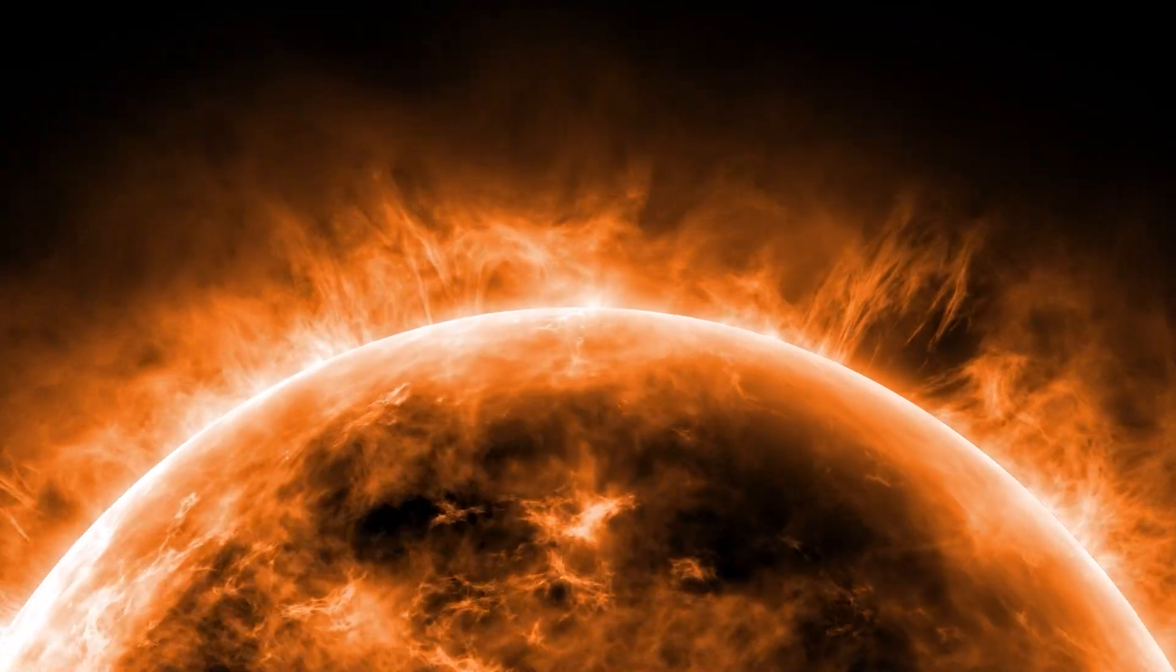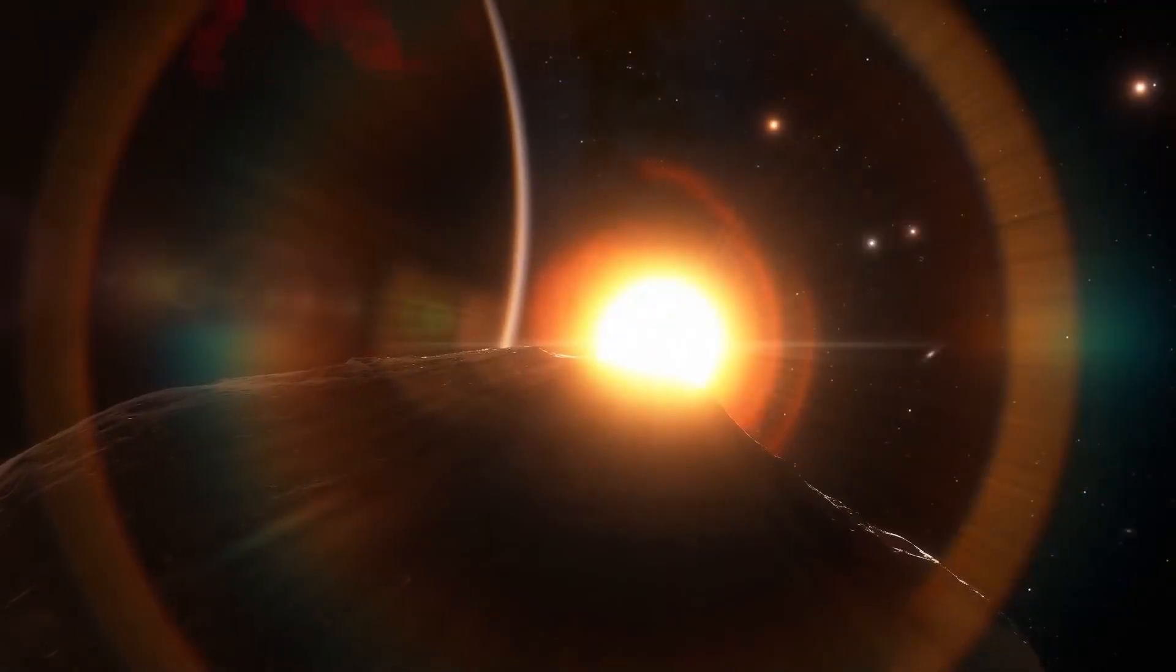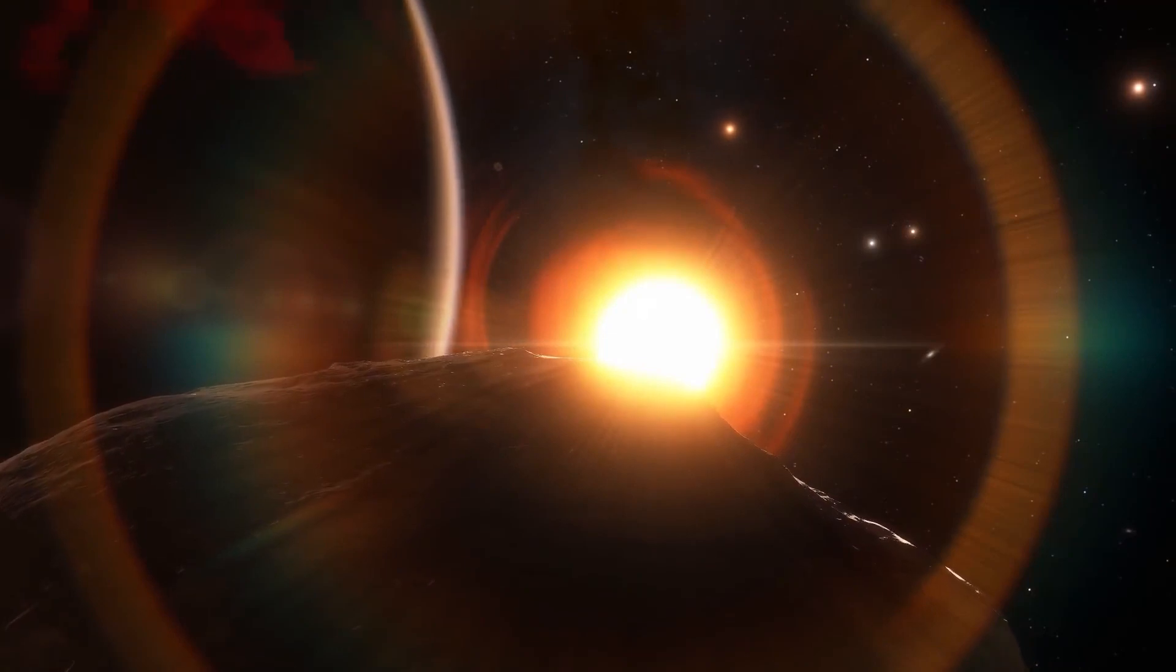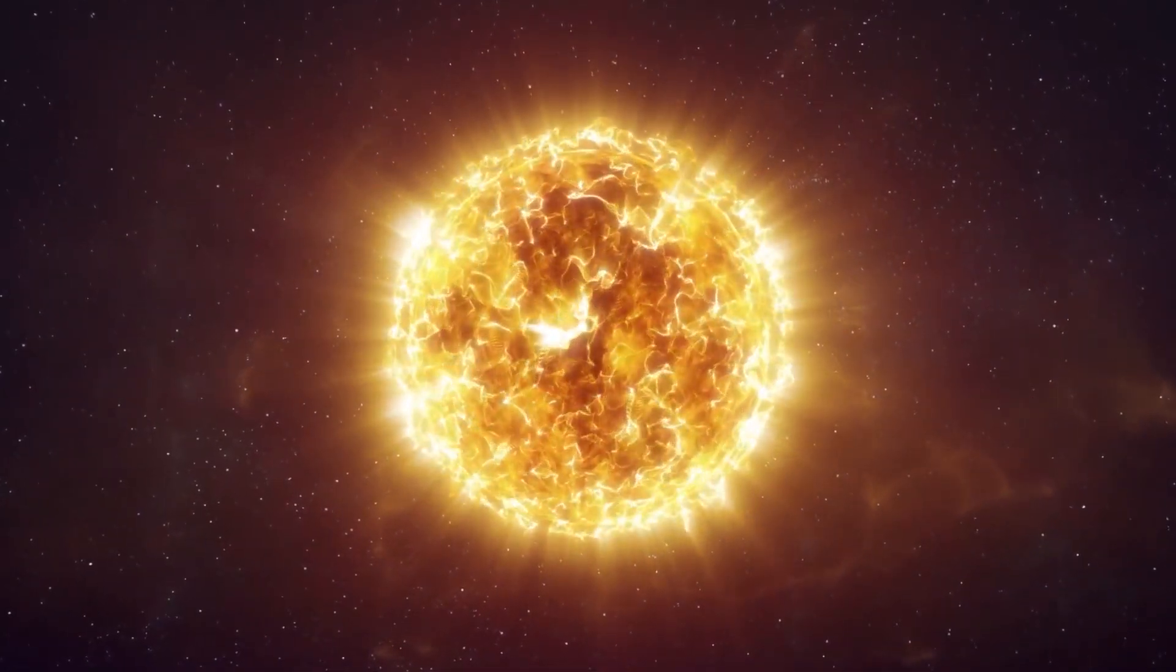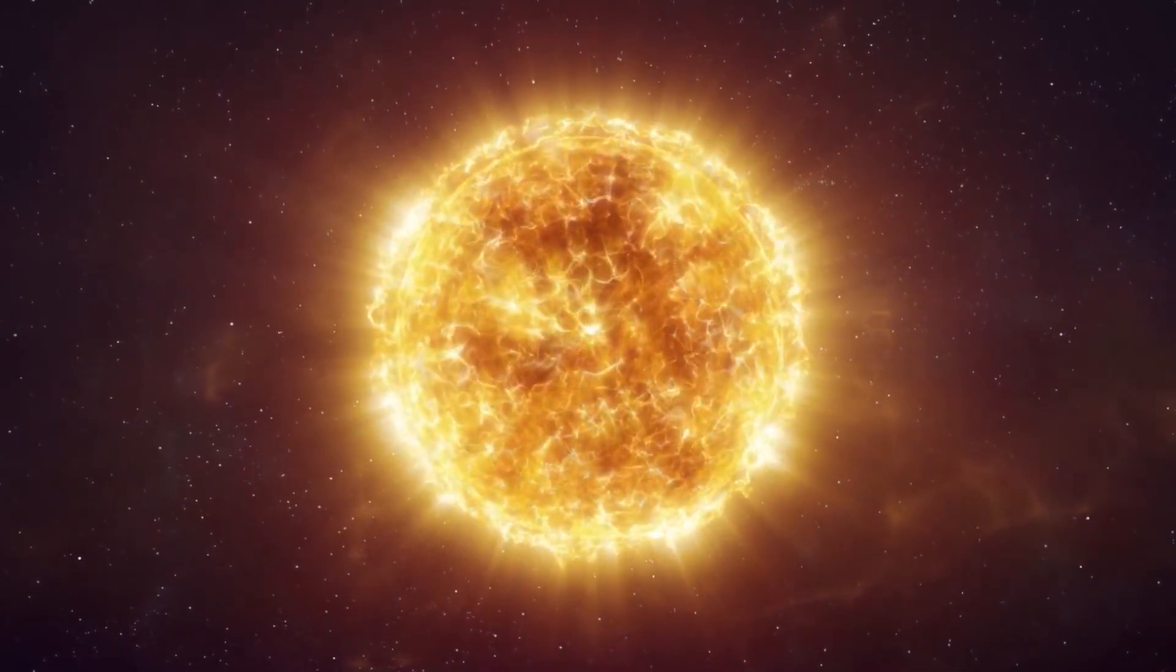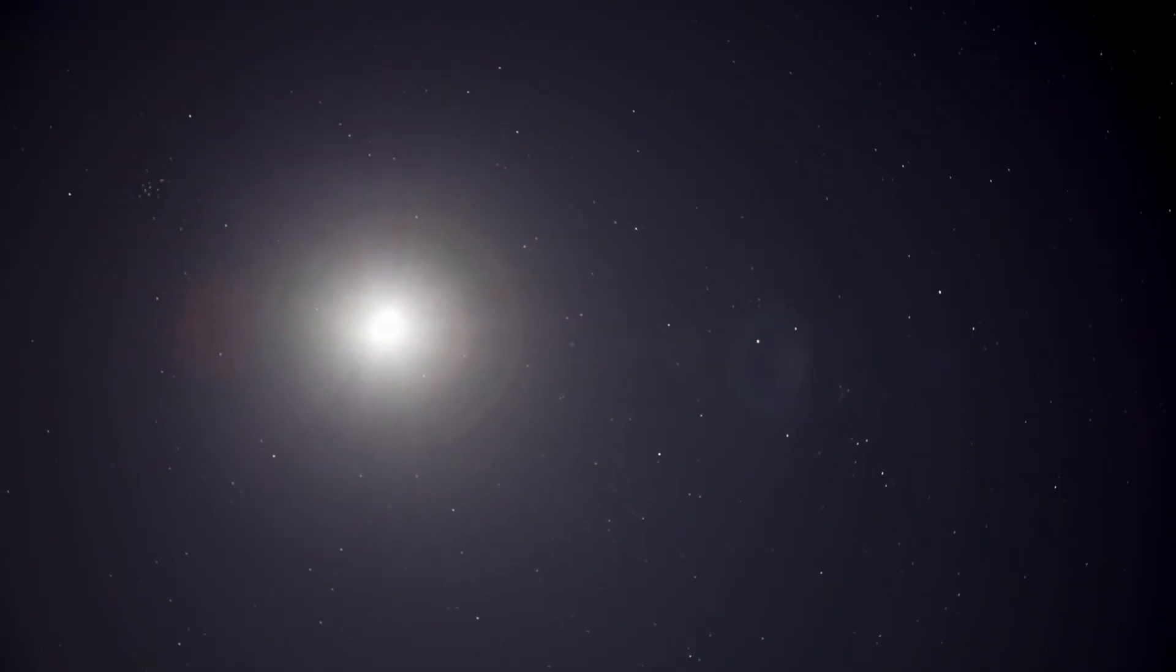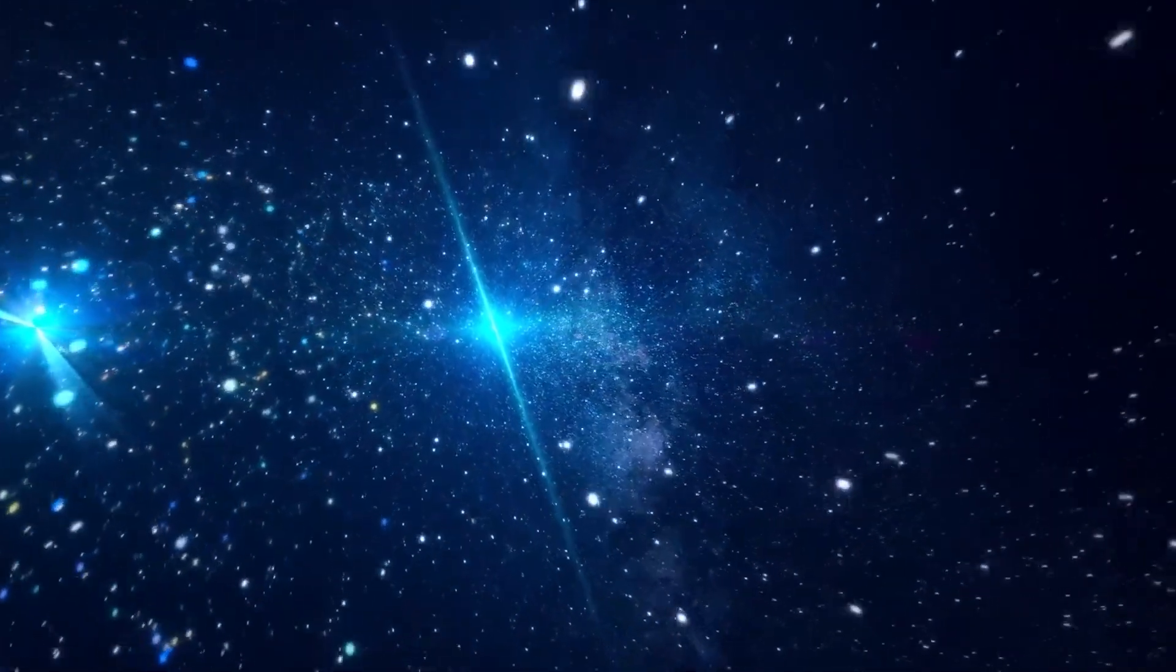If the distance of Stevenson 2-18 is accurate, it means that it measures in at a whopping 2,150 solar radii, which is 10 billion times the volume of our sun. Its circumference would extend farther than Saturn's orbit around the sun. An object traveling at the speed of light would